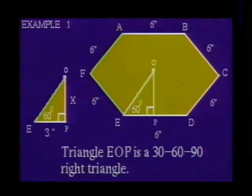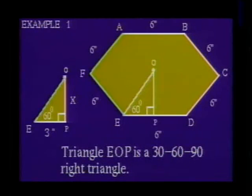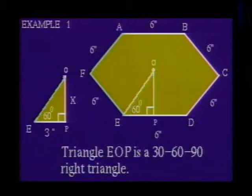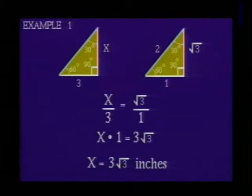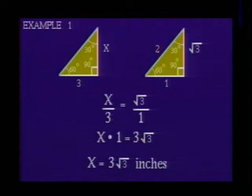Thus, the measure of angle OED will be 60 degrees. Draw in line segment OP so that it is perpendicular to line segment ED — this is the apothem. Because this hexagon is regular, the line segment OP bisects line segment ED. Thus, the distance from point E to point P is 3 inches. Notice that we have formed a 30-60-90 right triangle with the shortest side of length 3 inches. Let X be the length of the apothem and use similar triangles to write the proportion: X is to 3 as √3 is to 1. Solving for X, we find the length of the apothem is 3√3 inches.